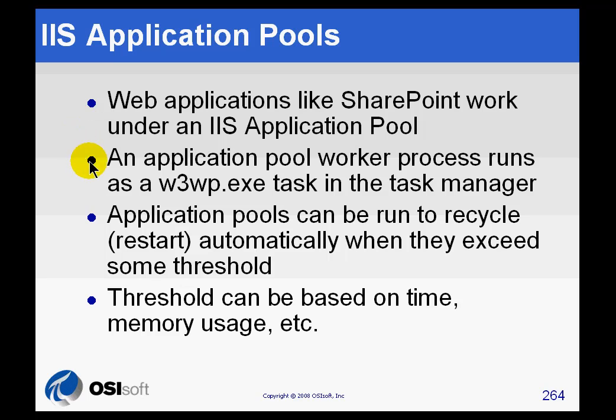The worker process that runs for the application pool runs an executable called w3wp.exe. It runs one of those for each application pool. So if you've got three different websites with different application pools, you'll see three instances of this.